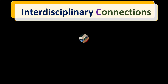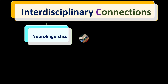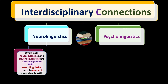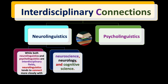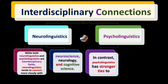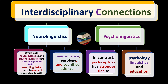Now, interdisciplinary connections between neurolinguistics and psycholinguistics. While both are interdisciplinary fields, neurolinguistics tends to connect more closely with neuroscience, neurology, and cognitive science — it is more inclined toward pure science. In contrast, psycholinguistics has stronger ties to psychology, linguistics, and education.